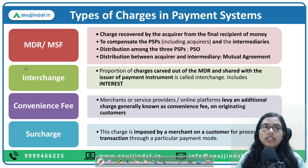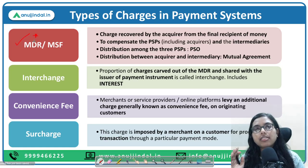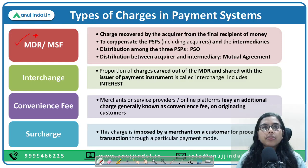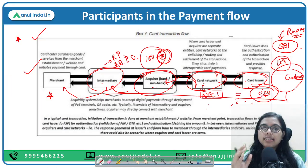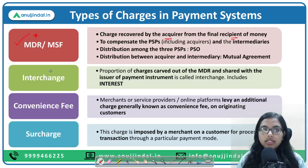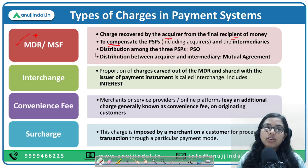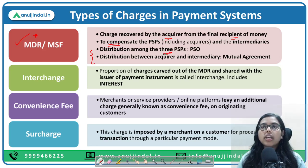Now let's understand the types of charges. The first and most important is the Merchant Discount Rate (MDR), also called merchant service fee. MDR is the rate charged by the acquiring bank — the bank receiving the payments — from the merchant for providing the facility of collecting money from the customer's card and sending it to the merchant. These are charges recovered by the acquiring bank from the final recipient of money, i.e., the merchant.